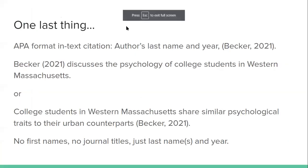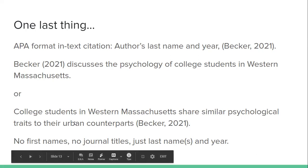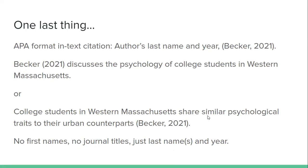One final thing to note: when writing in APA format, you include the full citation in the references page at the end of your paper. When writing about the article in the text of your paper, you use an in-text citation — the author's last name and year. You can include the author's name in your sentence, for example: 'Becker (2021) discusses the psychology of college students in Western Massachusetts.' Or you can include the in-text citation at the end of the sentence in parentheses, like: (Becker, 2021).